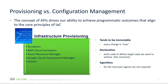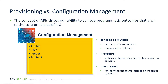Infrastructure provisioning tends to be immutable — every change is new. It's declarative, meaning you write code to define the target state you want to achieve. And it's agentless — for the most part, no agents are involved. Configuration management, on the other hand, tends to be mutable, updating versions of software with changes done in real time. It's procedural rather than declarative — you write code that specifies step-by-step instructions to drive a specific outcome, and it is agent-based, with agents installed on the system itself.